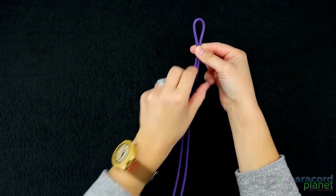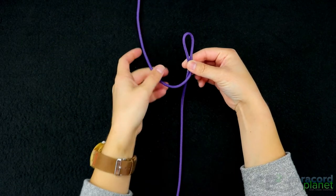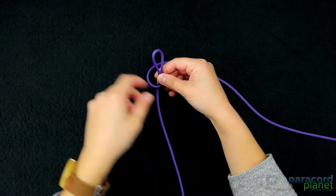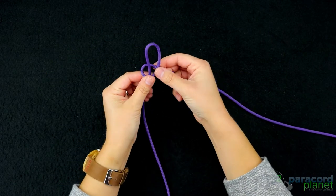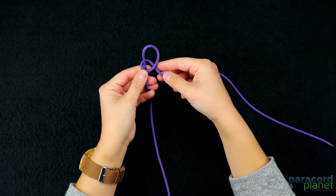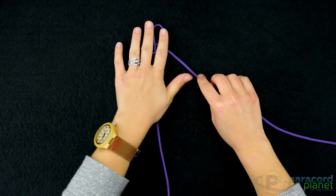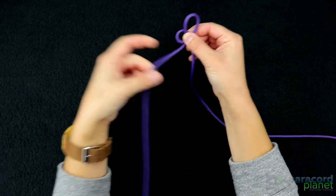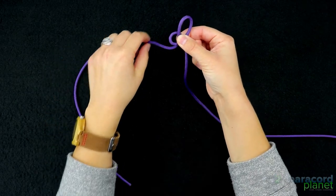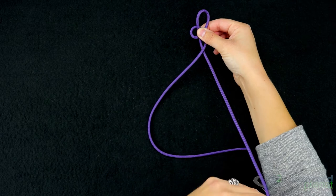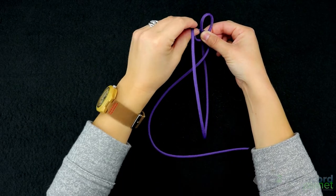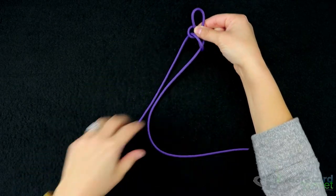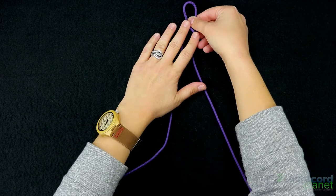Take your cord on the right and flip it over to the left, then flip it behind so it should look like this. Just like that. You'll take your cord on the left, bring it behind the cord on the right just like that and then go down through the loop. So loosely, that's what you should have.